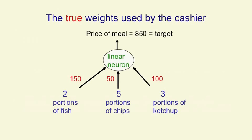Let's suppose that the true weights that the cashier is using are 150 for a portion of fish, 50 for a portion of chips, and 100 for a portion of ketchup. For the meal shown here, that will lead to a price of 850. That's going to be our target value.